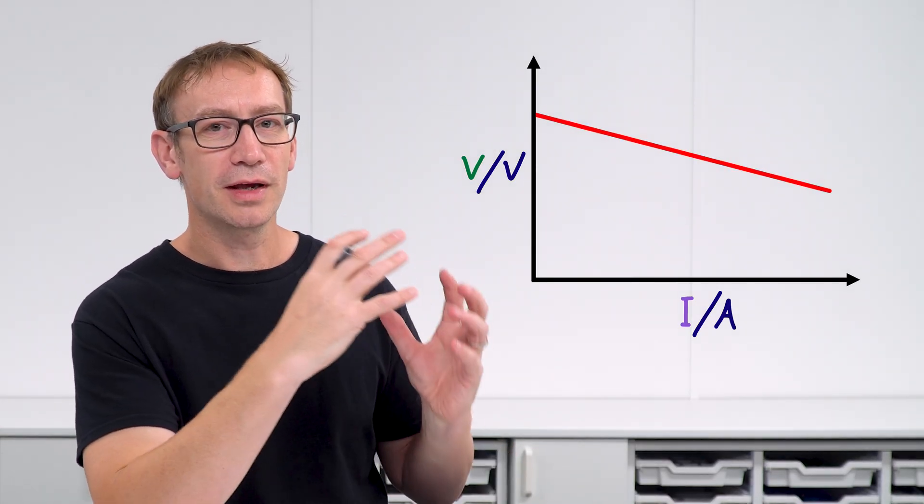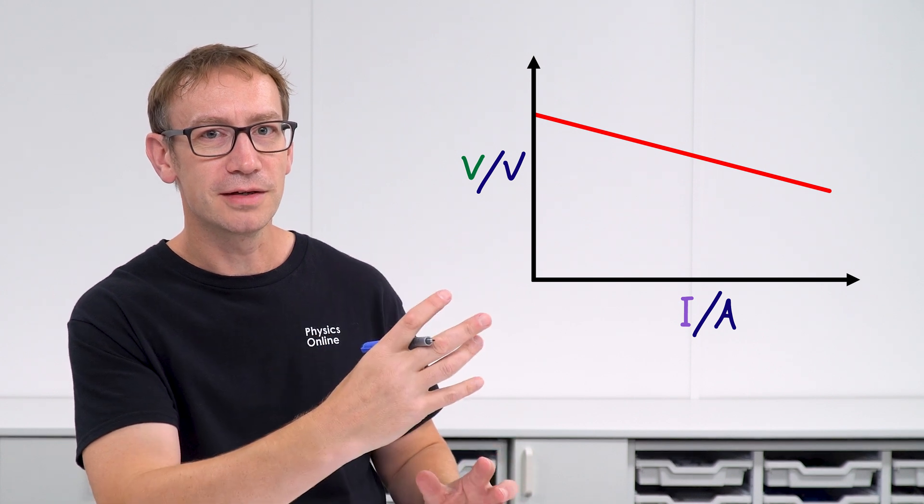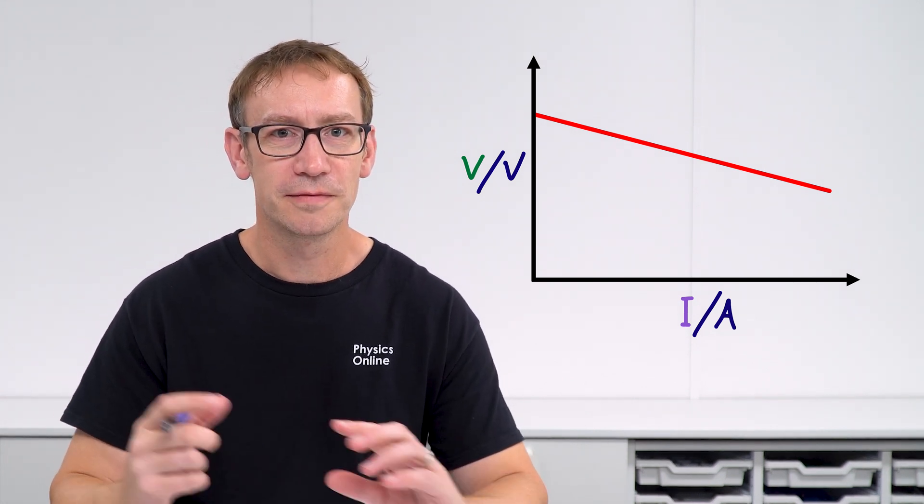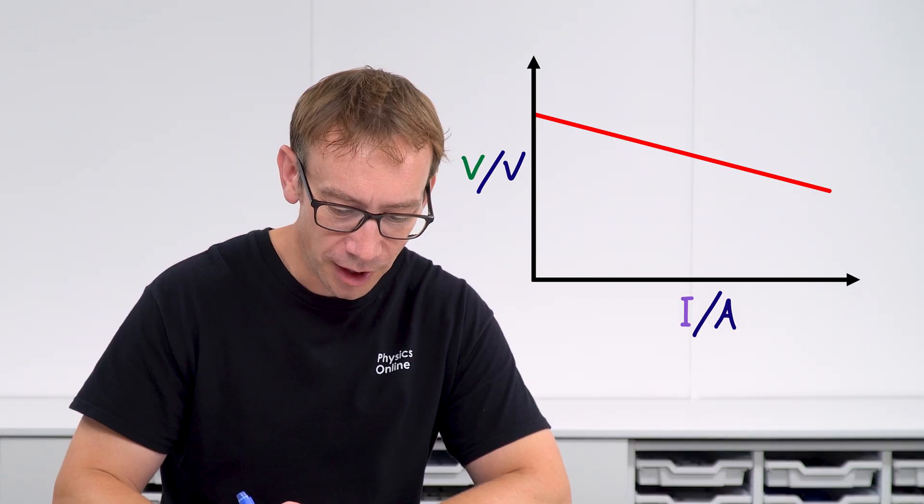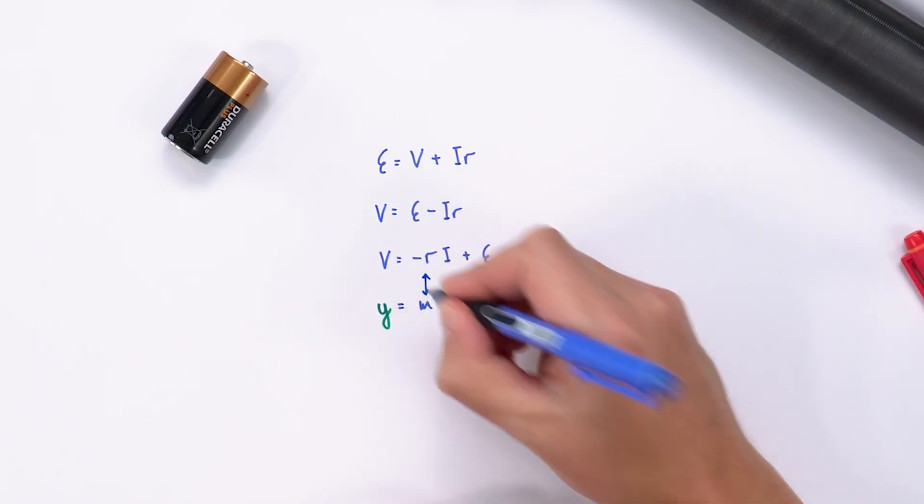Now that means if you work out the value of that negative gradient, you can multiply it by minus 1 to get a value for little r, because minus R is equal to the gradient.